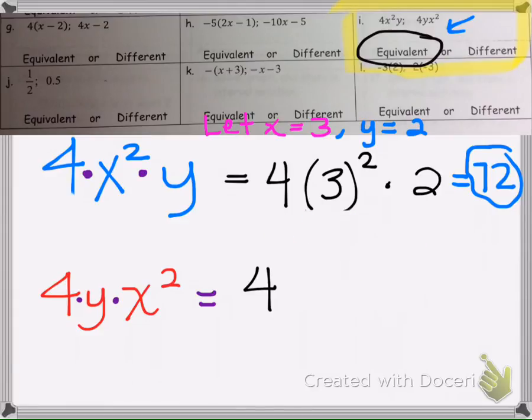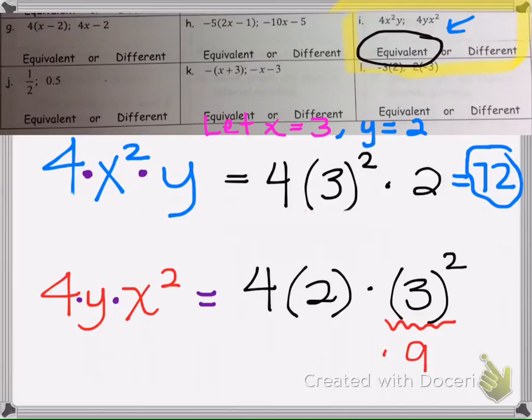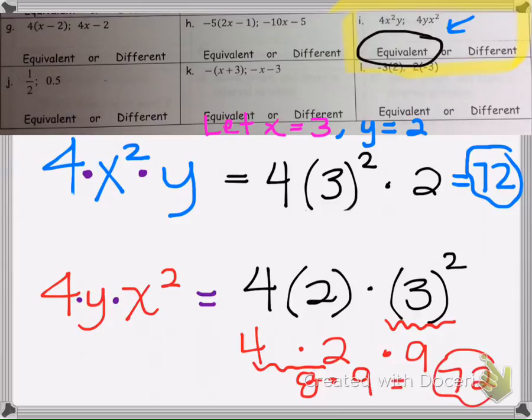So now if we do that same thing here, order of operations, we're still doing the 3 squared first. And then here we would have 8 times 9, which is 72. So as we can see, they're the same. So therefore their expressions are equivalent.